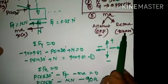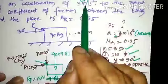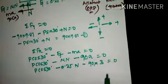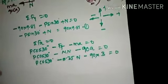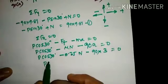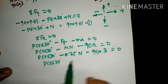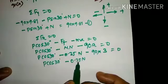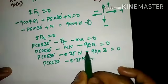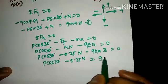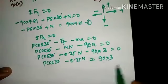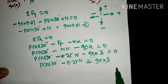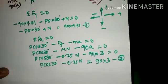Reframing Equation 2: P cos 30° − 0.25N = 90 × 3 = 270. This is Equation 2. We now solve Equations 1 and 2 simultaneously.